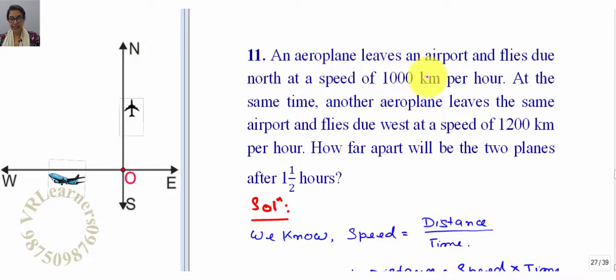Given that an aeroplane leaves an airport and flies due north at the speed of 1000 km per hour. That means suppose that O is the airport here, so here is an aeroplane fly here north. At the same time another aeroplane leaves the same airport, another aeroplane fly here west at the speed of 1200 km per hour.